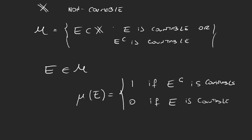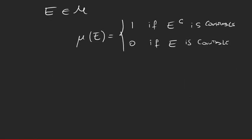Because if E complement is countable, then E is uncountable, and it's giving E measure 1. So it's really measuring those objects that are uncountable. Let's check the properties and find out if this function mu is a measure or not.